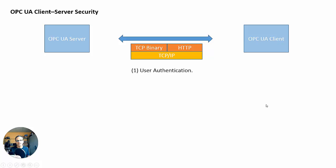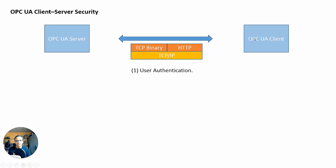The first one is called user authentication — a really big phrase for something that means username and password. You use it every day: username and password to log on to your laptop, your desktop, your phone or whatever. So essentially, the UA server will have within it the ability for you to configure users. Every user will have a username and password, so when the client is connecting, you have to put that username and password in the client and then say connect. You as the designer, engineer, or technician have to do that.